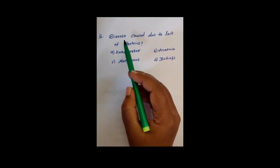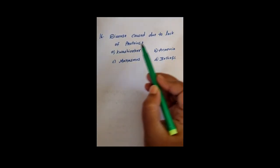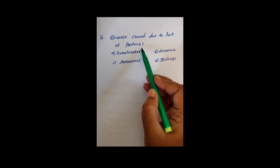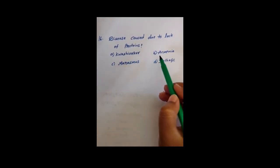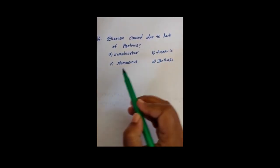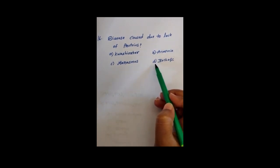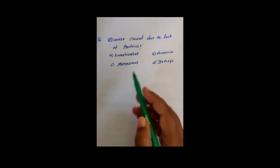The next question is: disease caused due to lack of proteins. The options are A. Kwashiorkor, B. Anemia, C. Marasmus, D. Both A and C.